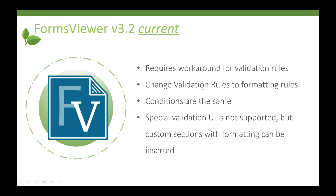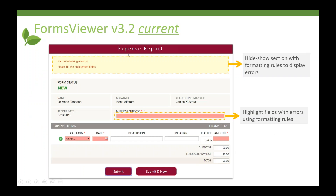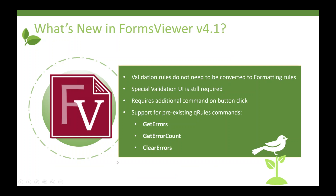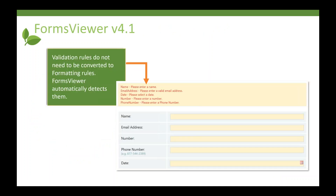In 3.2 we changed the validation rules for forms, but it required some manual intervention — not a lot of time, but there was still a barrier. What we're doing in 4.1 — let me give you an example of what we used to do. We had a sample form you could download with validation in it. On the expense report, you can see we're highlighting the background using a formatting rule where fields need to be added. When they click submit, we highlight the unfilled fields and prevent submission. Now in 4.1, we have proper validation support.